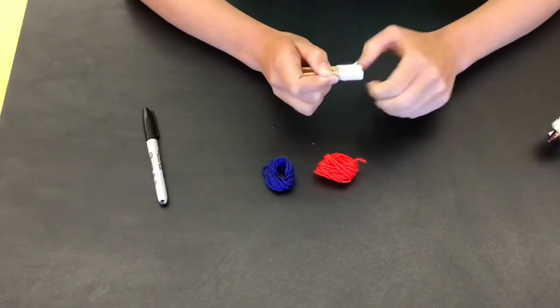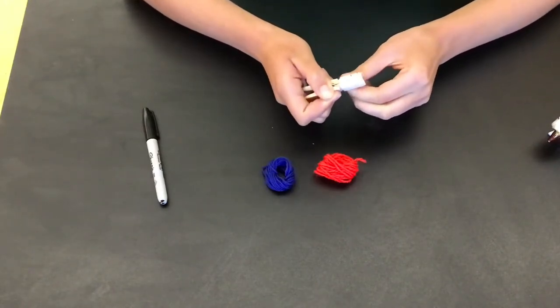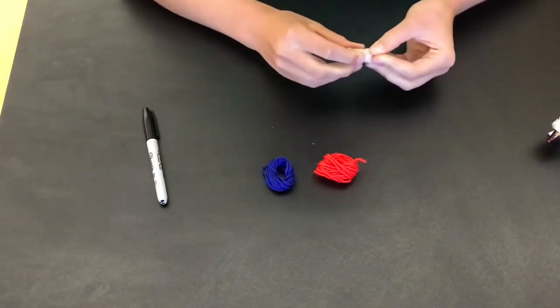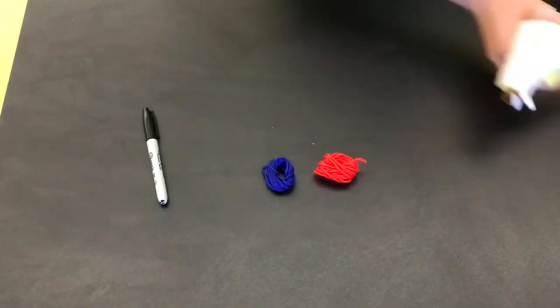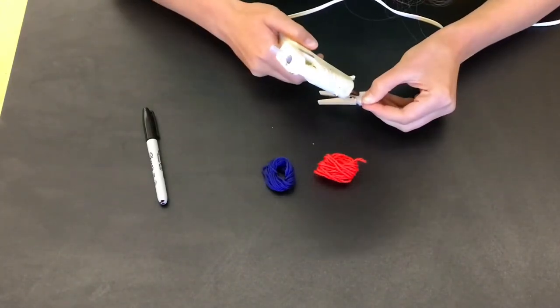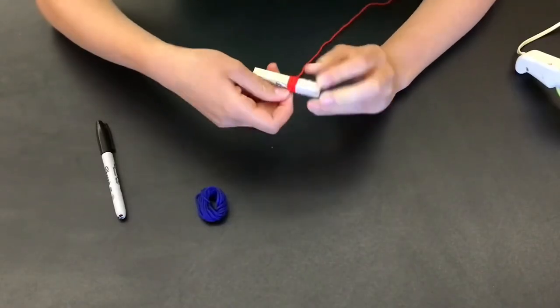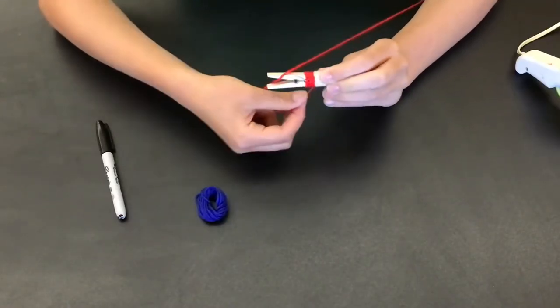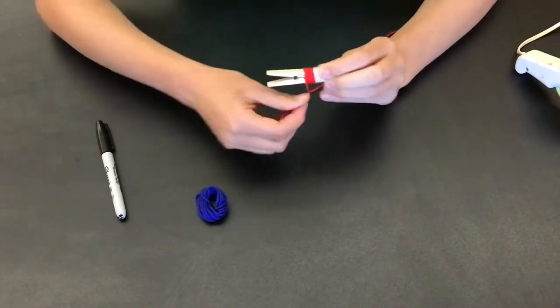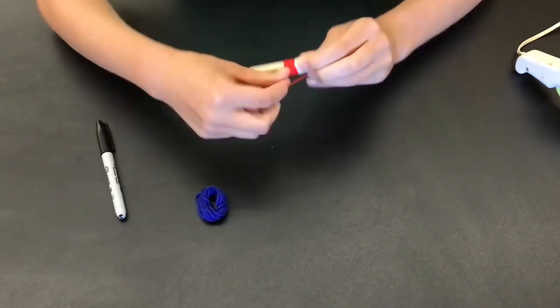That's going to be where you stop wrapping your light thread. Then you're going to take your glue and glue the end of your light thread down. And then after you got that glued down, you're going to take your second color and glue it down at the same spot. And then just like before, you're just going to keep wrapping it around.